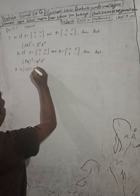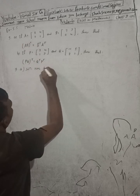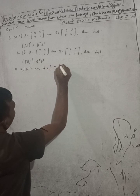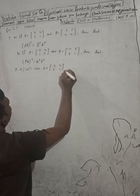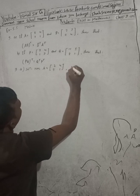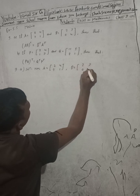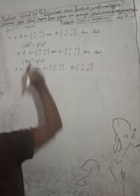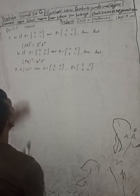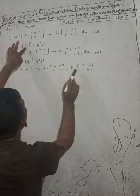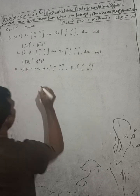First, let's write what is given. A is equal to [2,4; 3,1] and B is equal to [2,3; 0,4]. Now to show this, first we have to find A transpose and B transpose. A and B are already known.